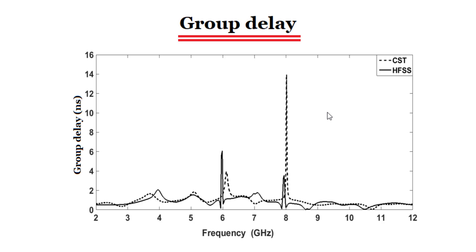We use this parameter a lot in wideband and ultra-wideband communication systems such as satellite and radar. We can say that group delay is a parameter that gives us an indication of the time delay that a signal suffers in proportion to the bandwidth of the antenna. Here we have an example of group delay showing a comparison between HFSS and CST for an antenna — group delay in nanoseconds versus frequency. The best group delay is one that has stable values.